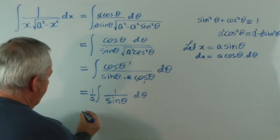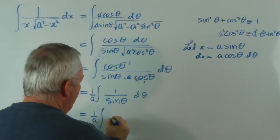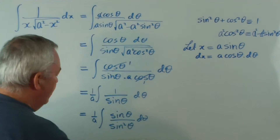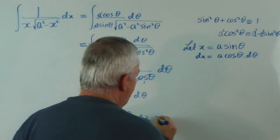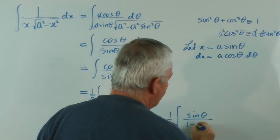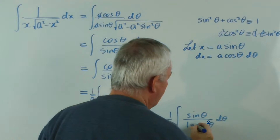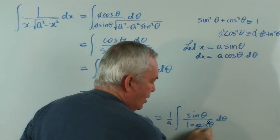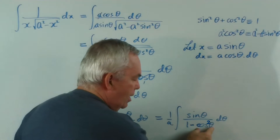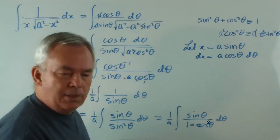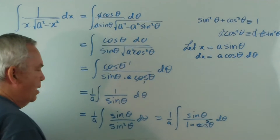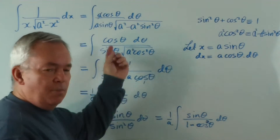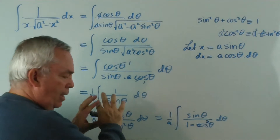What I'm going to do is leave the 1 over A out the front and multiply top and bottom by sin theta. I hope you can see where I'm going here — I'm going to replace this sin squared theta by 1 minus cos squared theta, because hopefully you can see that we have another substitution we can make. And if you haven't seen my video 17, please go back and look at it, because you'll see this integration done in a totally different way.